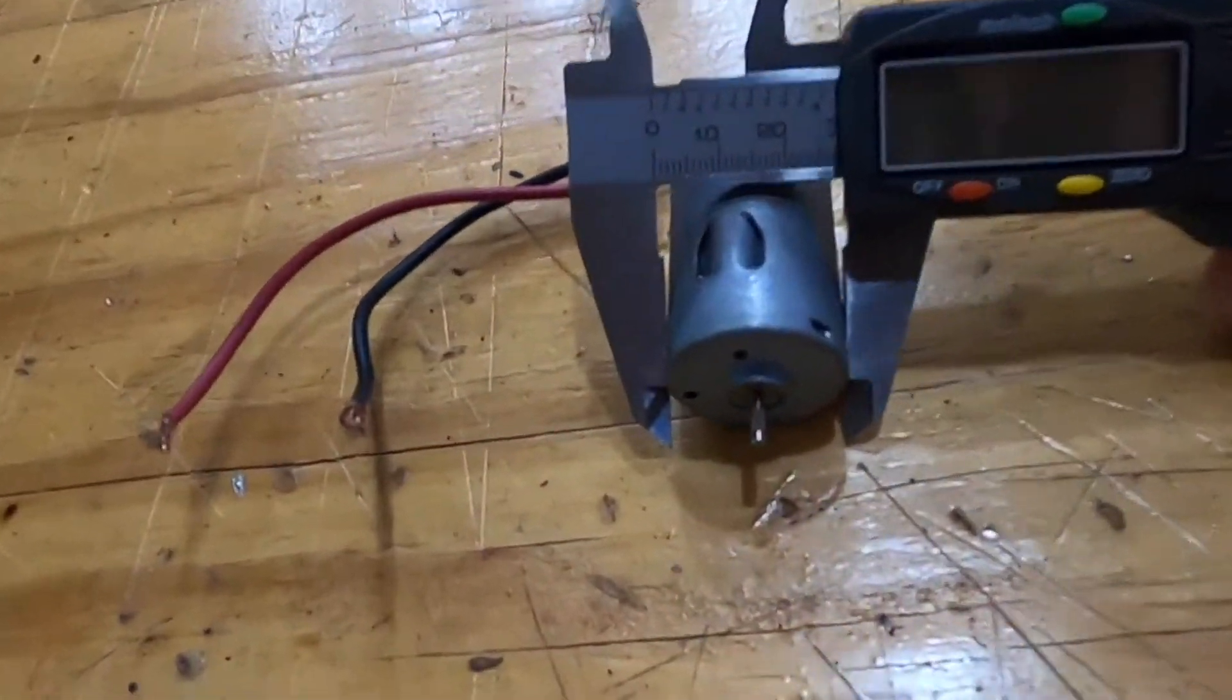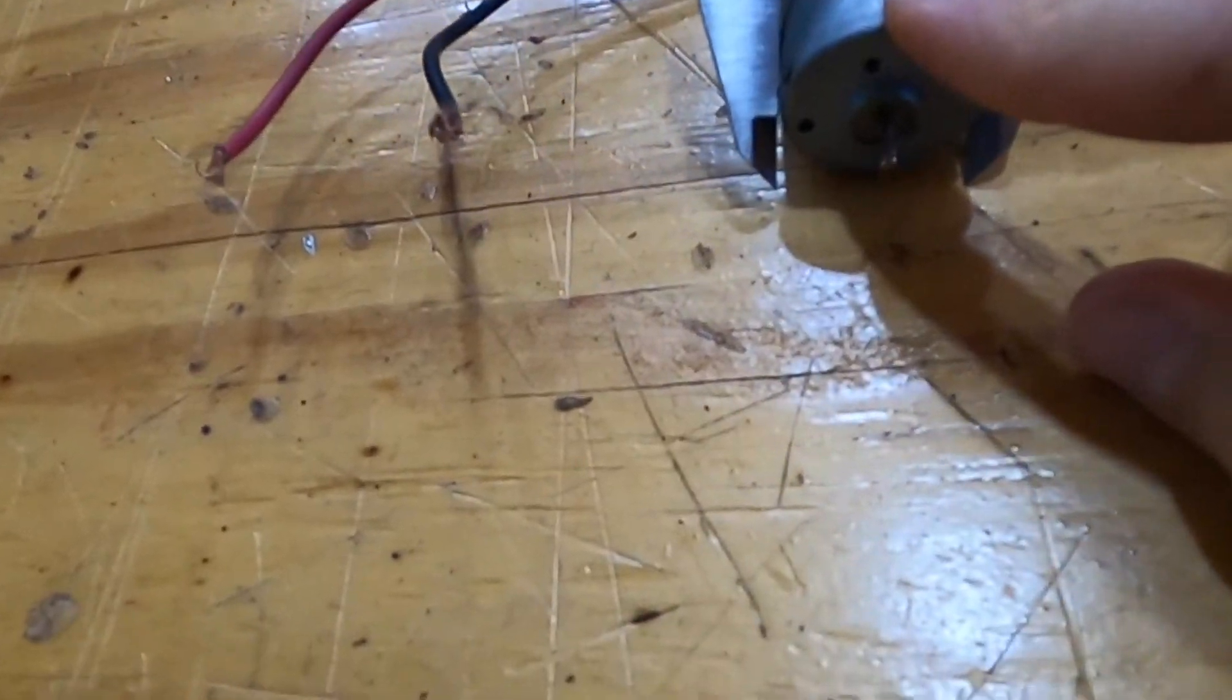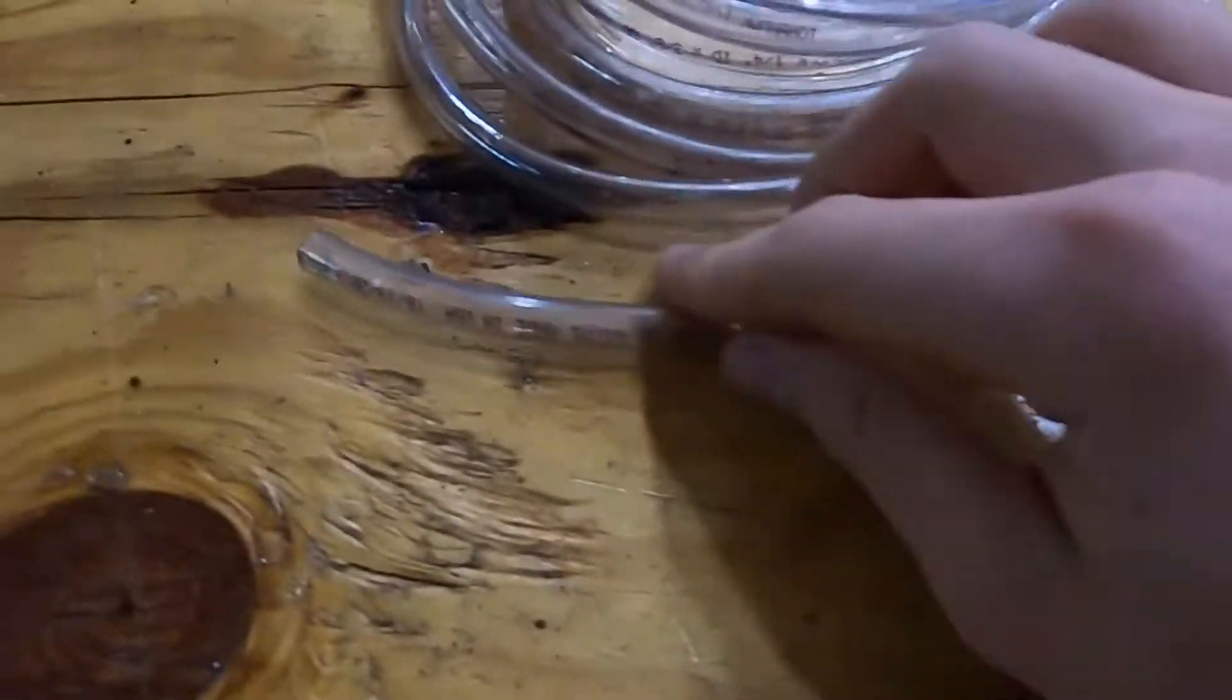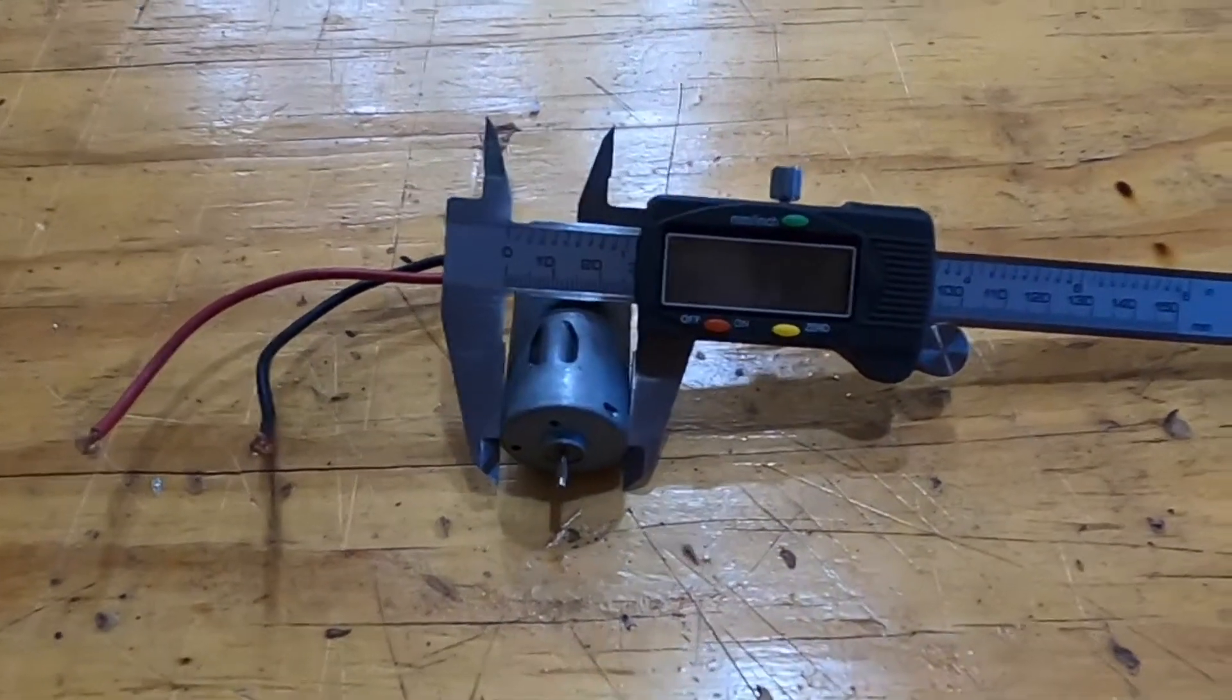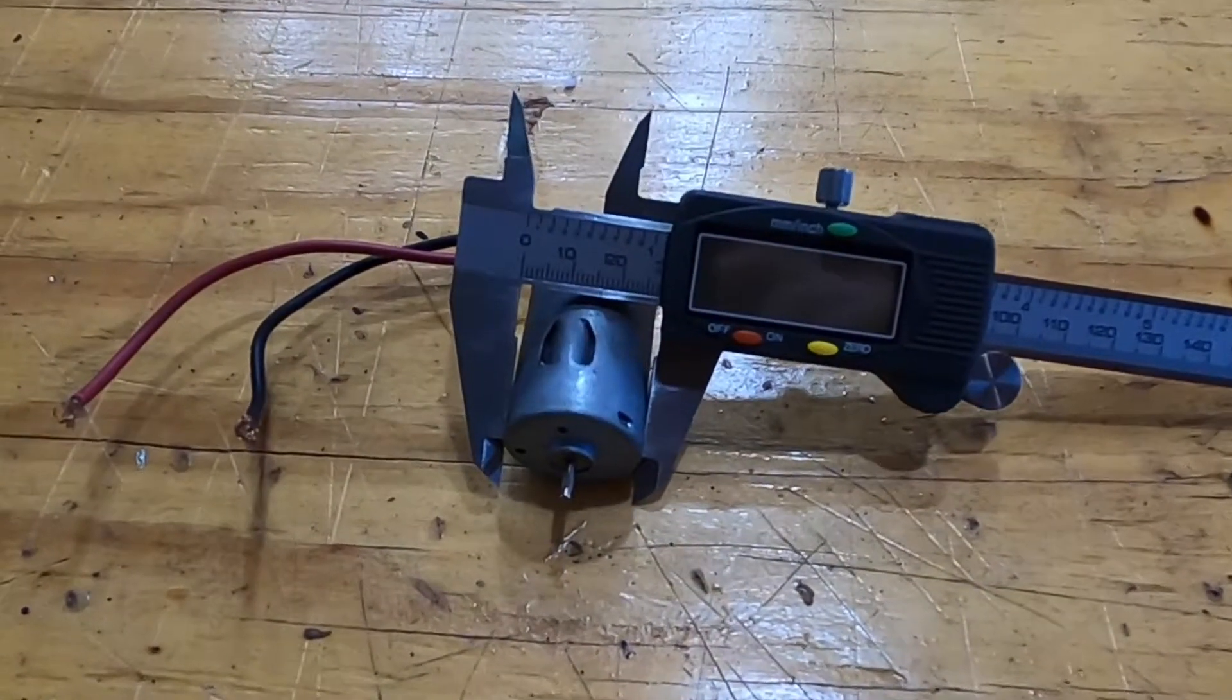I'm going to be using this digital caliper just to check the measurements of the motor and the shaft and also this tube, just in case we actually do end up using that. I'm going to take the measurements and then we can use a CAD program to design the whole water pump.